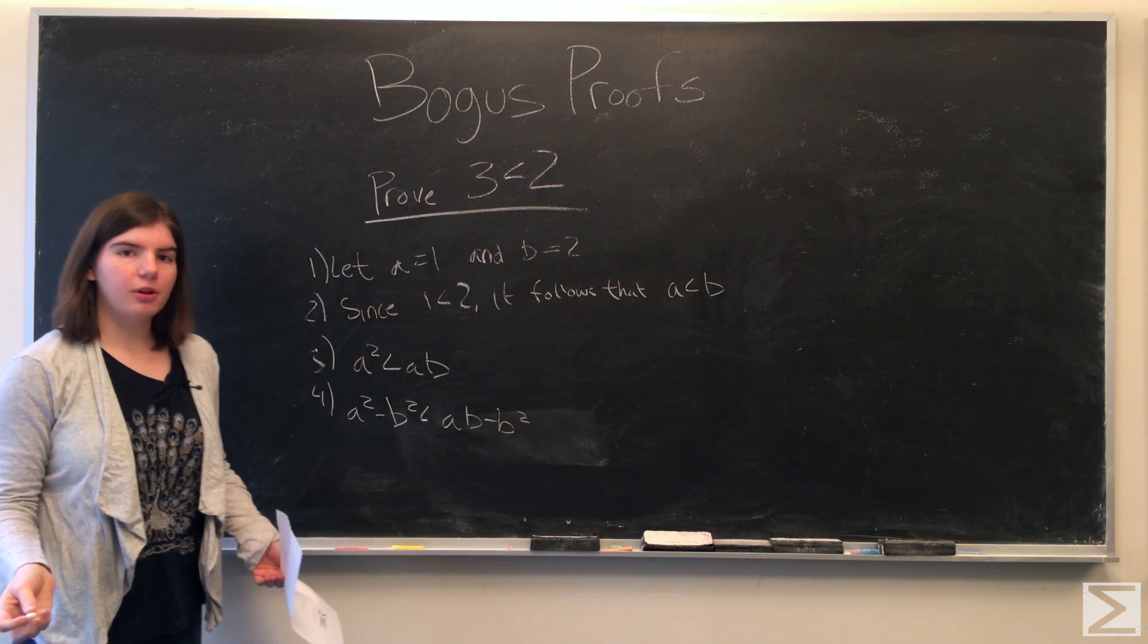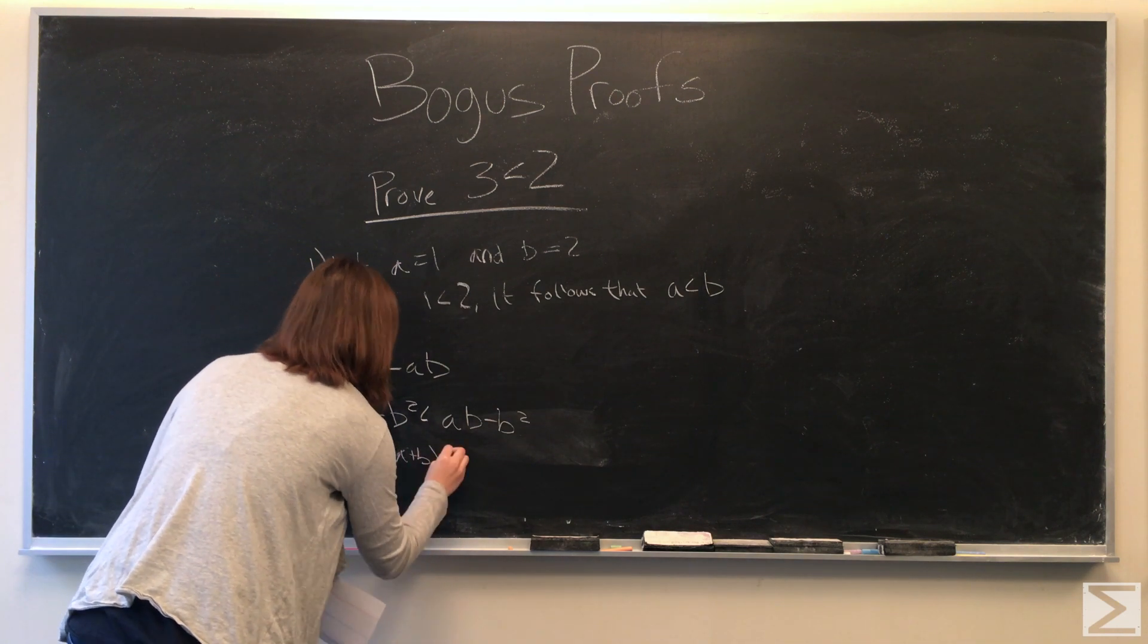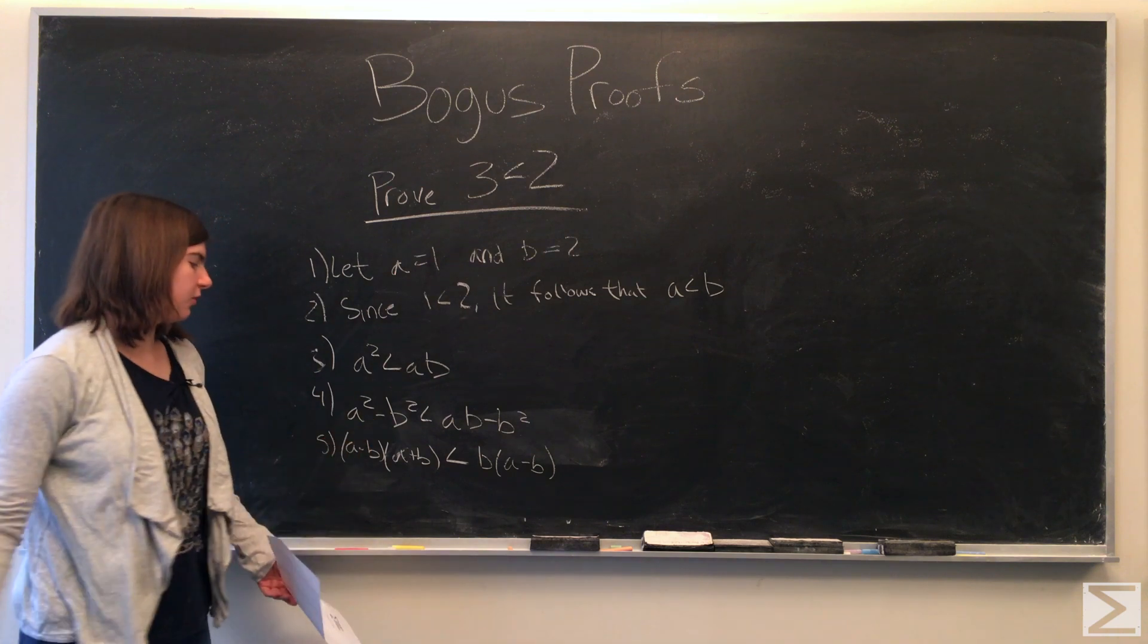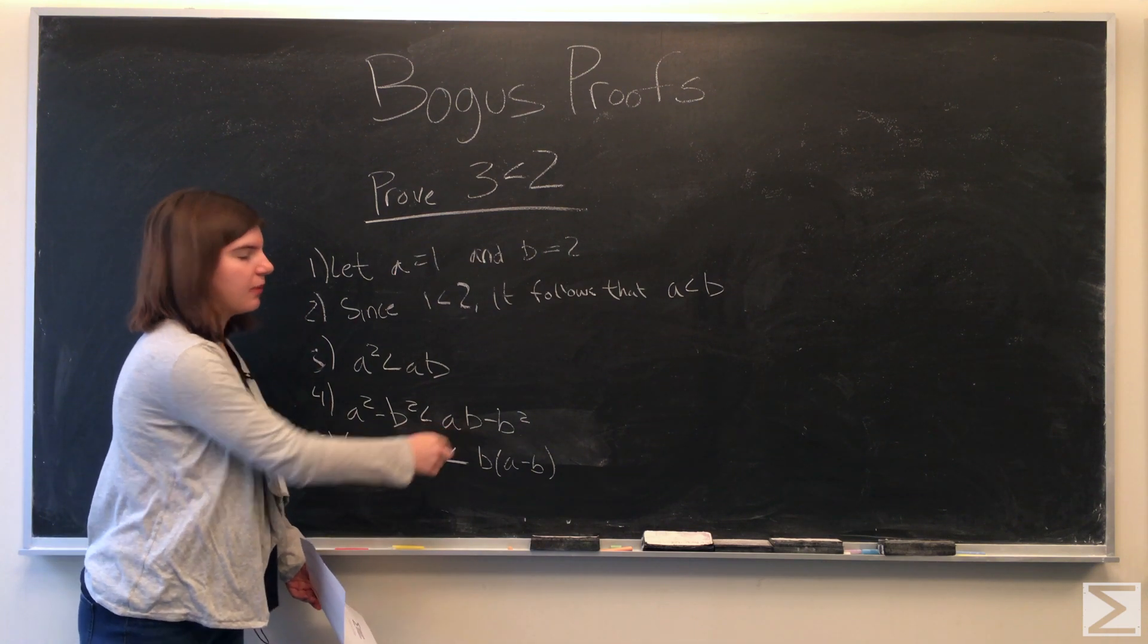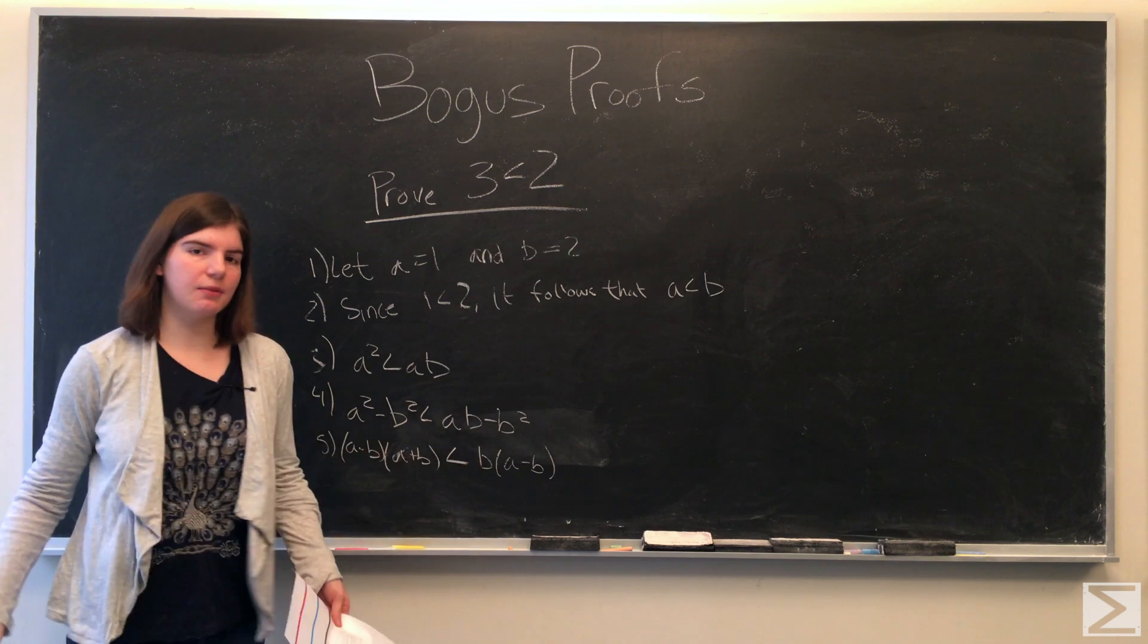And we can factor the polynomials. A squared minus B squared becomes A minus B times A plus B. And AB minus B squared, factor out the B and we'll have B times the quantity of A minus B.